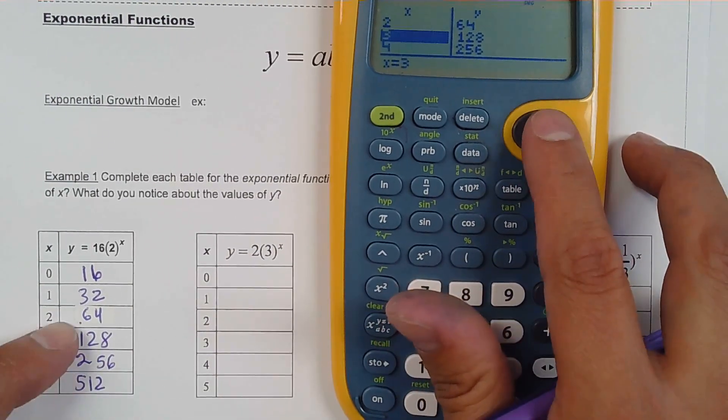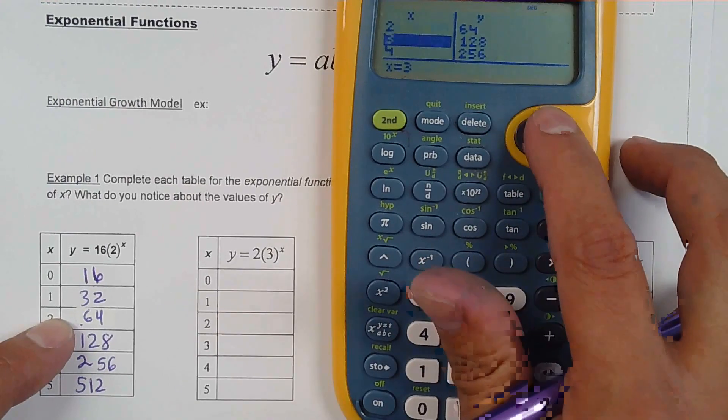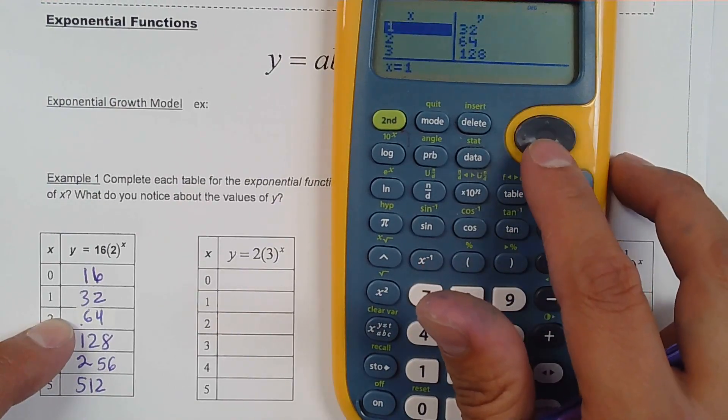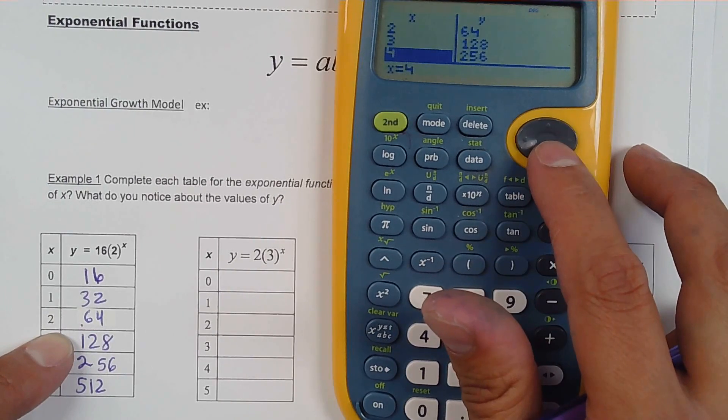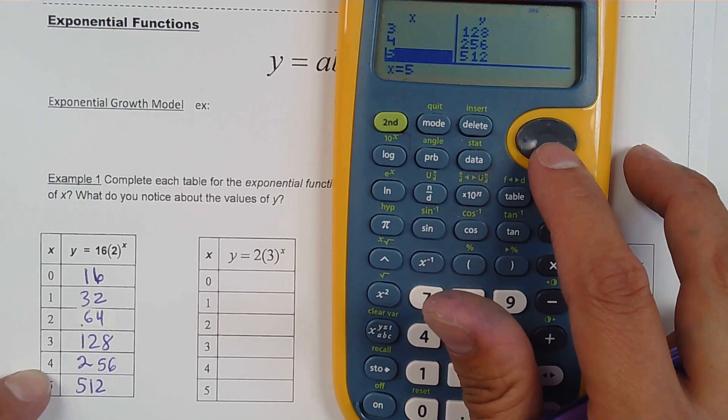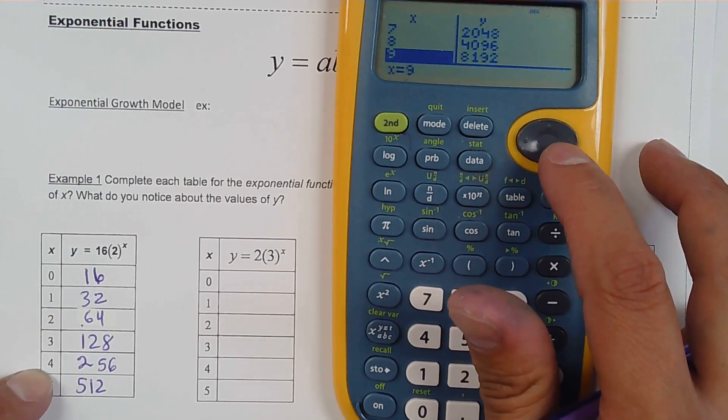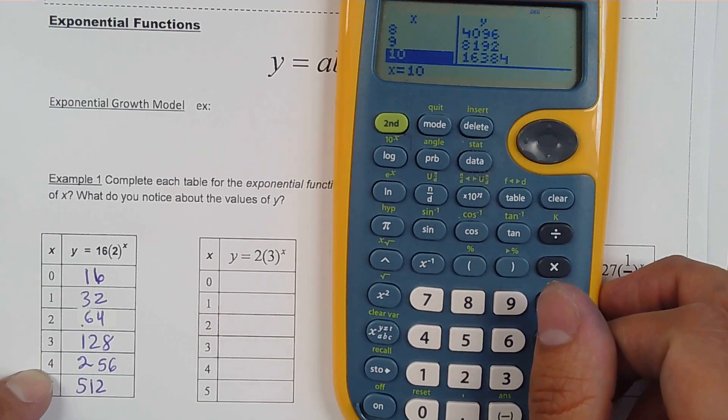Even if I didn't catch my mistake here I would have caught it after I did my checking, check my solutions. So 128, 256 and 512. You can go all the way to 10. Boom. There it is. See how much time that will save us.